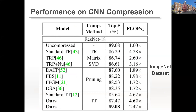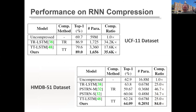On ImageNet with ResNet-18, our method achieves higher accuracy and lower computational cost compared to prior low-rank, tensor decomposition, matrix decomposition, and structural pruning approaches. On RNN workloads for video recognition, we achieve much better top-1 accuracy with fewer parameters and a higher compression ratio than prior tensor decomposition works.